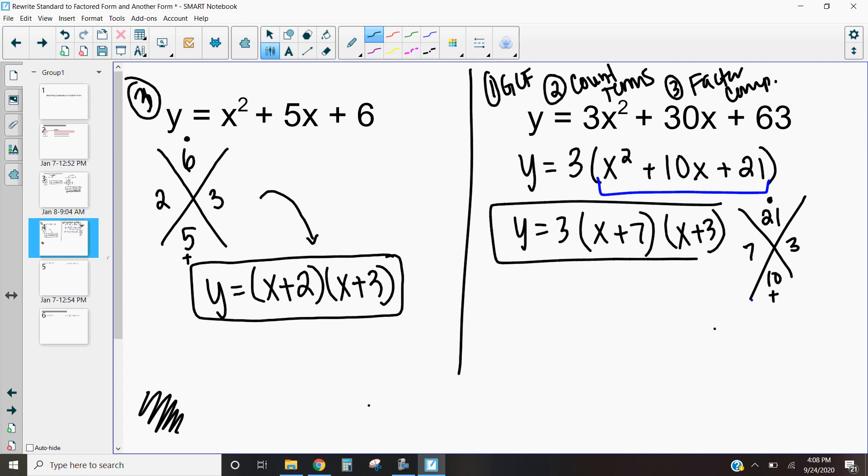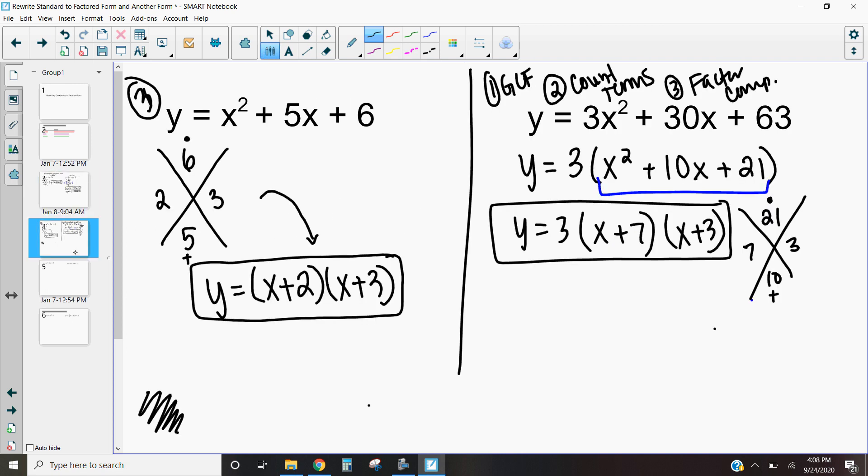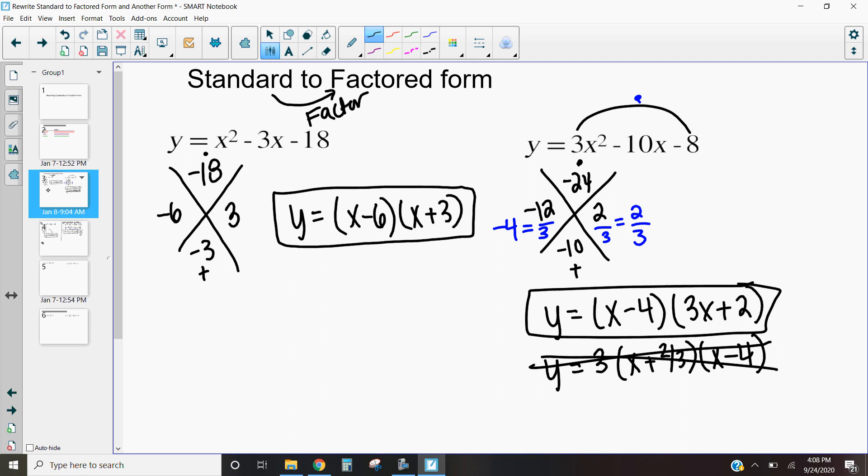This is vertex form. So that's how we would go from one form. They're not vertex form. That's called factored form. Wow. That is how we go from standard form to factored form—all we got to do is factor our polynomial.